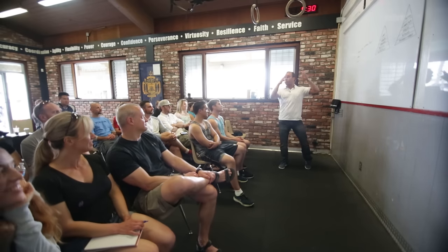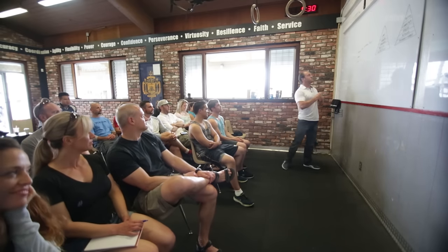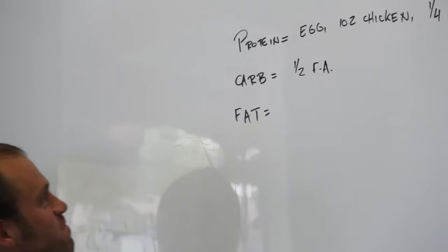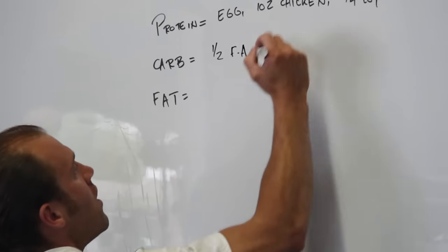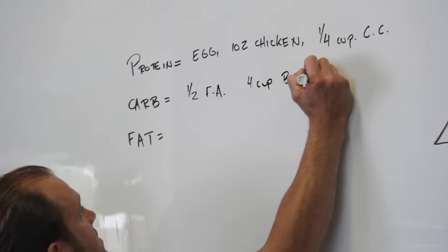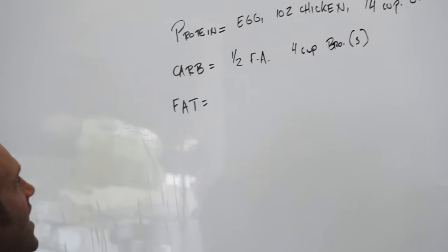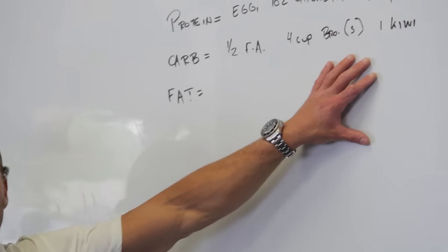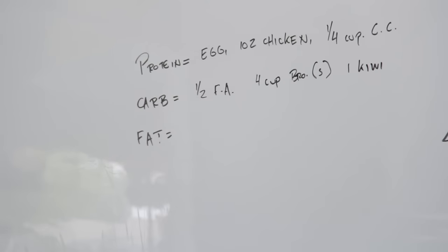We'll go one half Fuji apple, four cup broccoli steamed, and one kiwi. Again, it just so happens that these choices that I put on the board, these are all one block of carbohydrate.